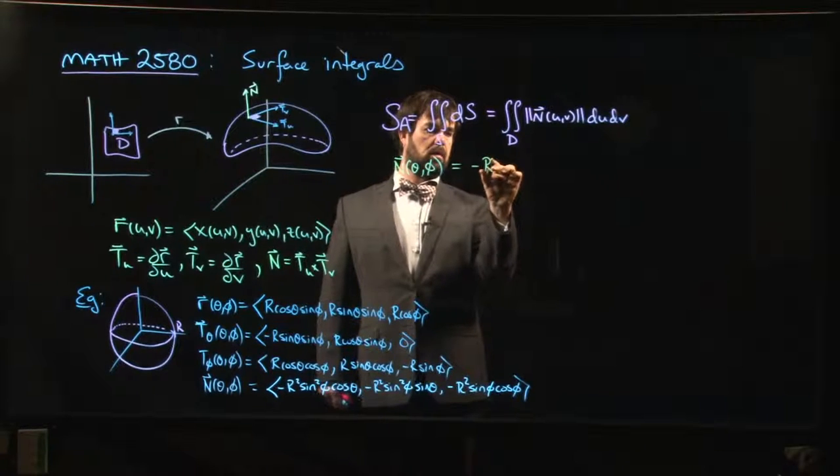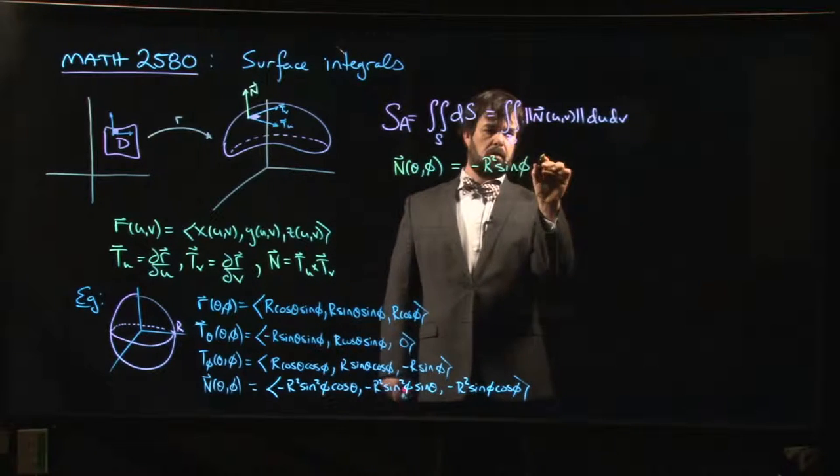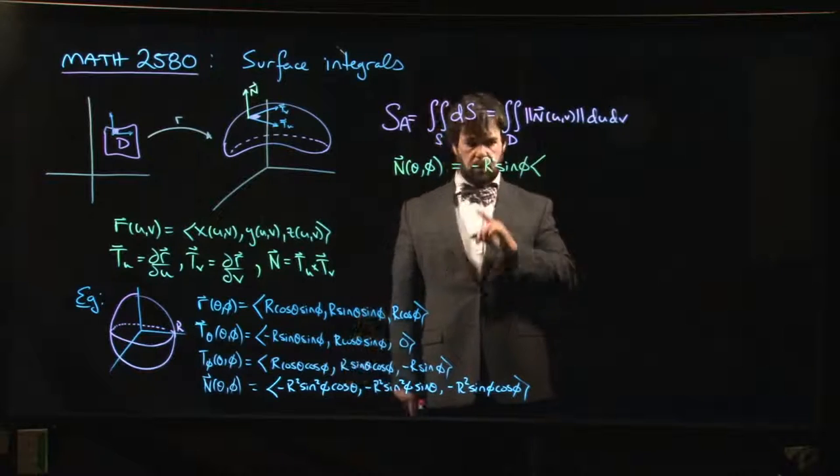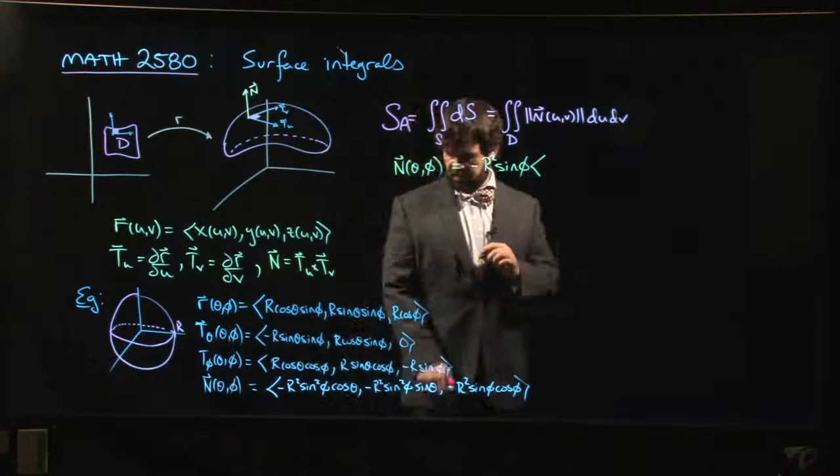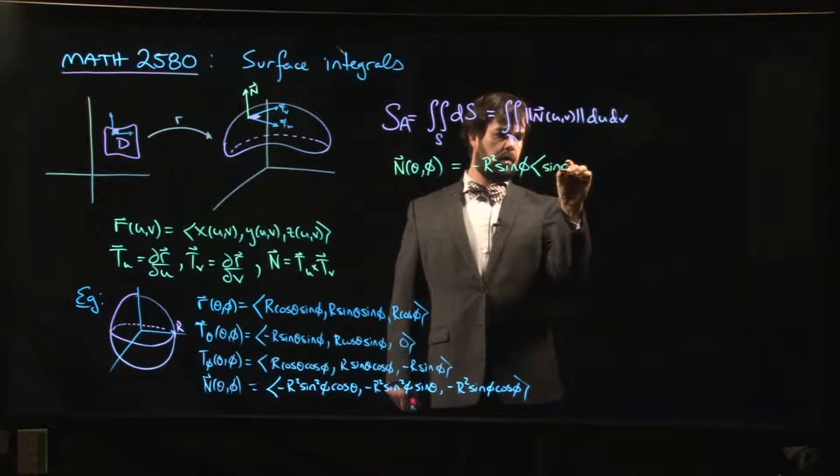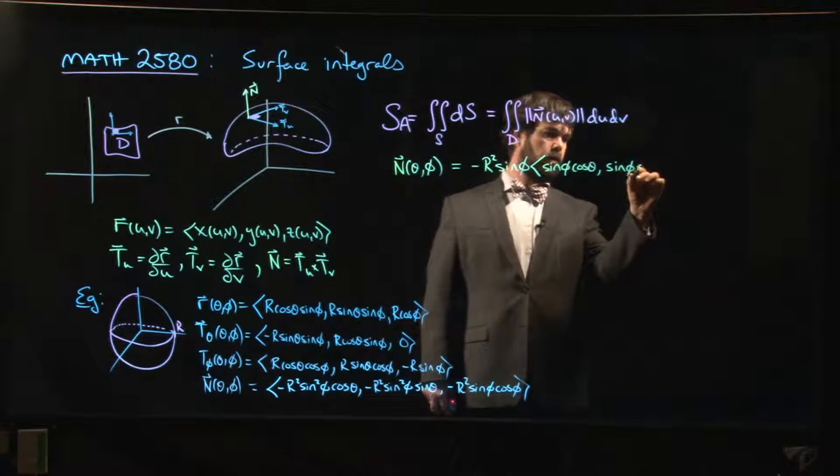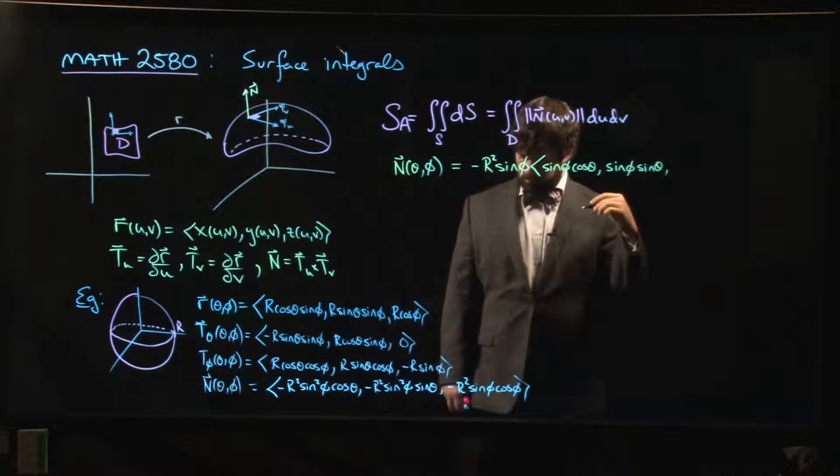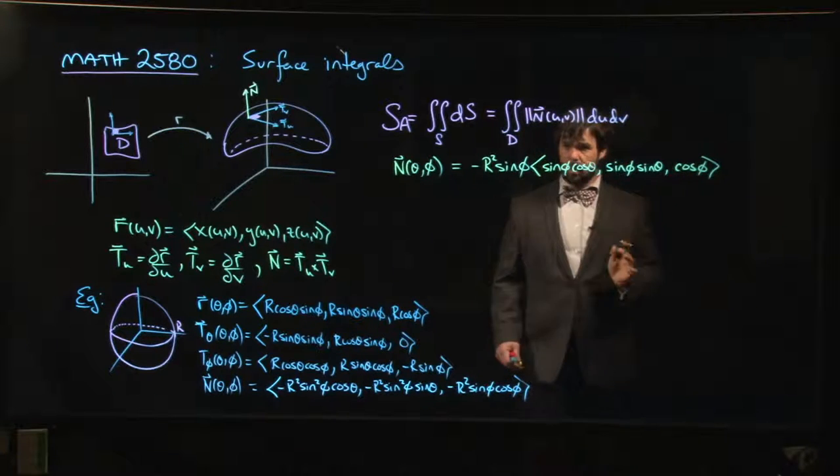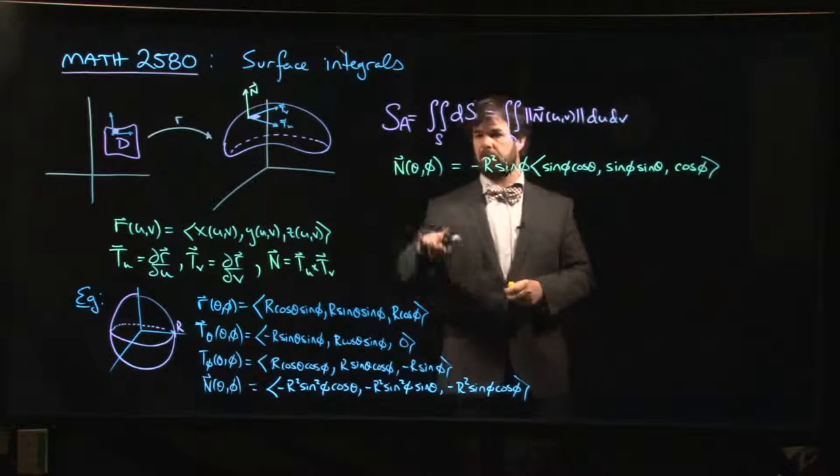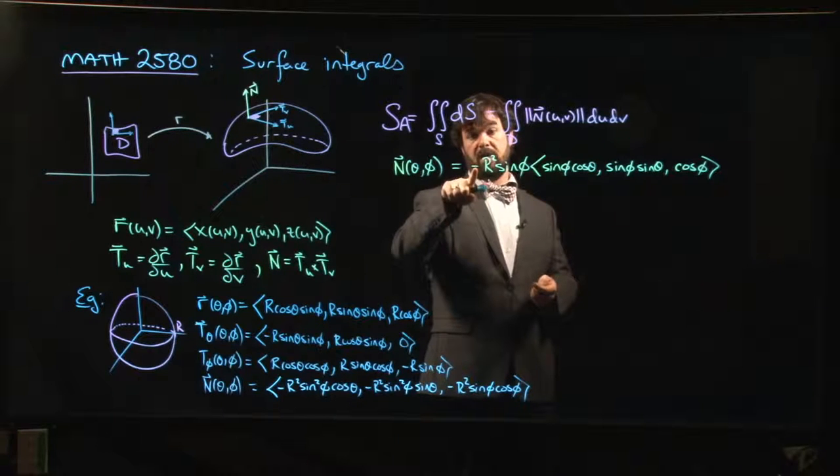There's a minus R squared sine phi that you can bring out, and then you're left with sine phi times cos theta, sine phi sine theta, and cos phi. That simplifies things a little bit because we know that when you compute the magnitude of a vector, if there's a scalar multiple out front, you just multiply by the scalar or the magnitude if you happen to have a negative like you do here.